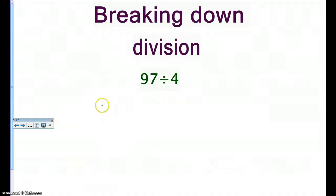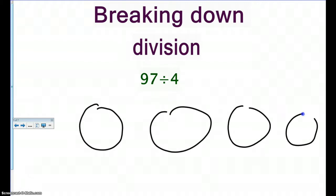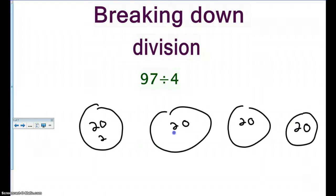Let's move on to ninety-seven divided by four. I'm going to draw four circles. I can probably count by pretty big numbers, so I'll start counting by twenties: twenty, forty, sixty, eighty. Then I'll count by twos: eighty-two, eighty-four, eighty-six, eighty-eight. Right now I'm at eighty-eight.